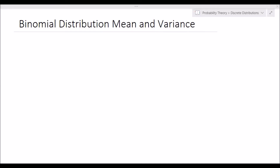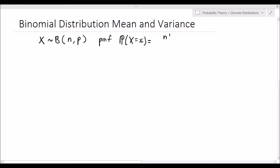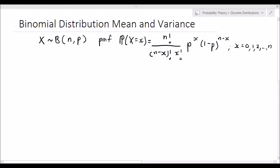Let's start off and remind ourselves: if a random variable X is distributed binomially with n number of trials, with each having a success probability of p, then the PMF for X — the probability that X equals some small x — is equal to n factorial over (n minus x) factorial times x factorial, multiplied by p to the power x times (1 minus p) to the power n minus x. Always remember to quote the support of your distribution. The binomial distribution takes on values from 0, 1, 2 — its support takes on values from 0 to n.